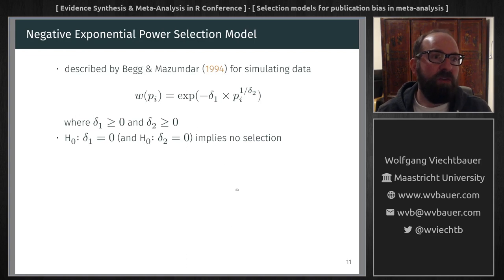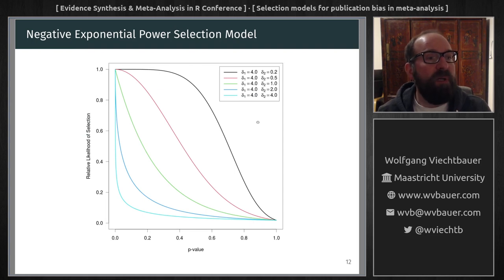Next, an extension of this model is the negative exponential power selection model. Here, quite a mouthful. This is a two-parameter function again, and this gives it more flexibility as to what that selection function can look like. Now, in all of these examples, there's a smooth function that describes the association between the p-value and the selection likelihood.